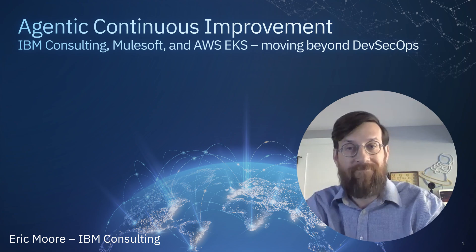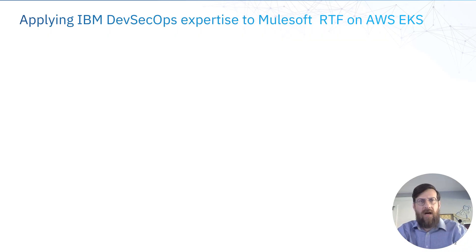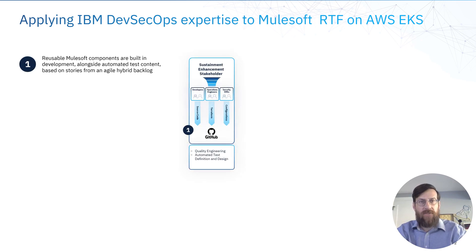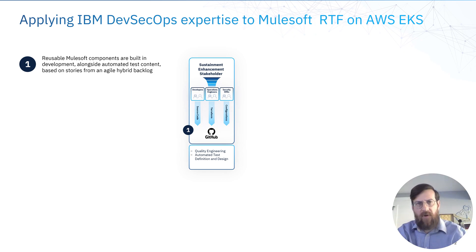So let's get started. This is building on a previous video I did about DevSecOps, and that's the expertise we're applying to MuleSoft runtime fabric on AWS EKS. The first thing we're talking about here is using an agile backlog approach with requirements from sustainment, enhancement requirements, and stakeholder points of view. Those are going into a JIRA. You're seeing this hybrid backlog with requirements going to your SMEs — developers, security SMEs, operations engineers, etc.